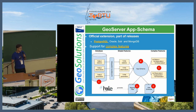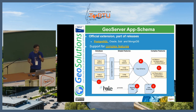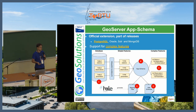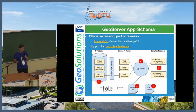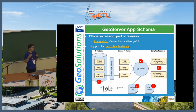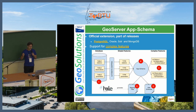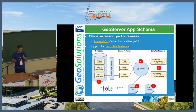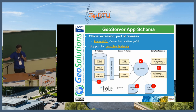When publishing vector data targeting Inspire compliance, you should be publishing complex features. The GML you need to generate is not a flat list of attributes, but a complex tree of information properly organized and defined in advance by the Inspire specification itself. So you have a target application schema — an XML schema — that you have to abide to. We have a plug-in called application schema designed to map between your source information and the output model, through mapping files that describe how to go from A to B.